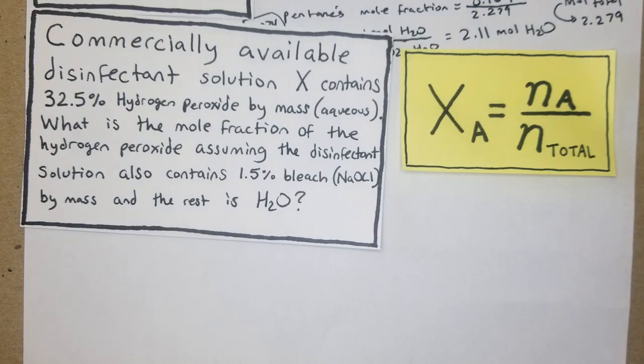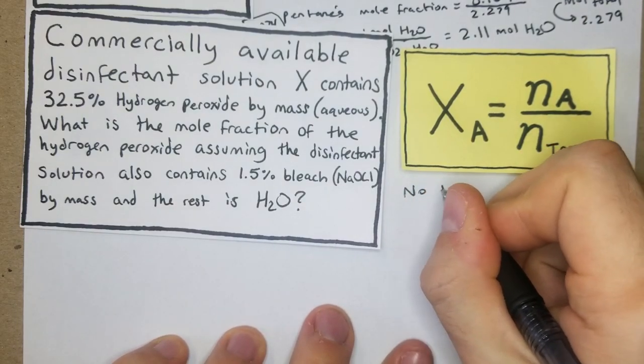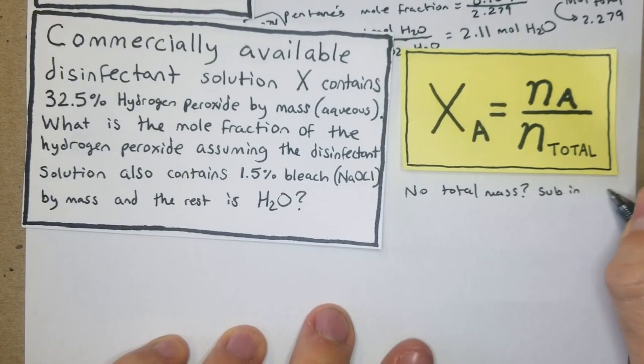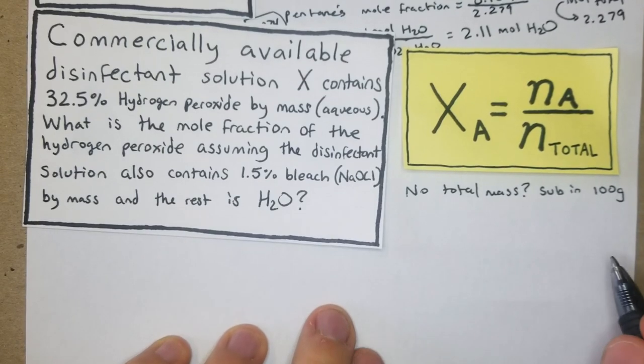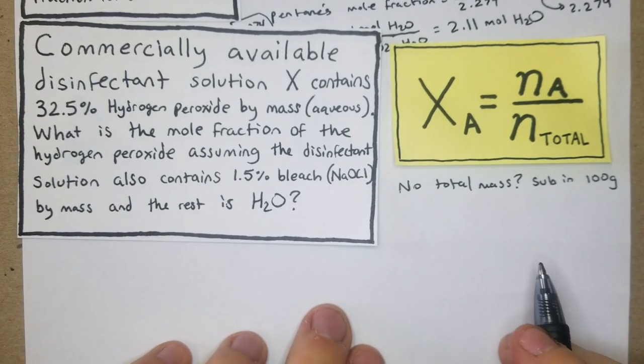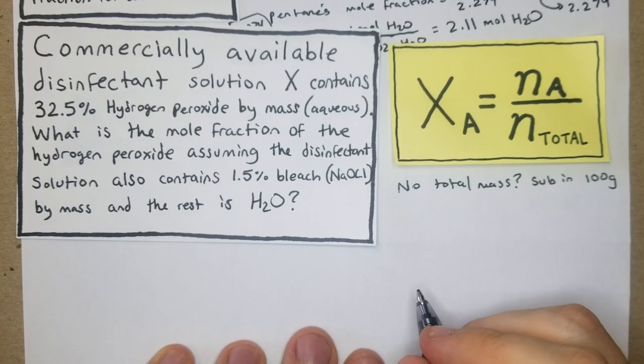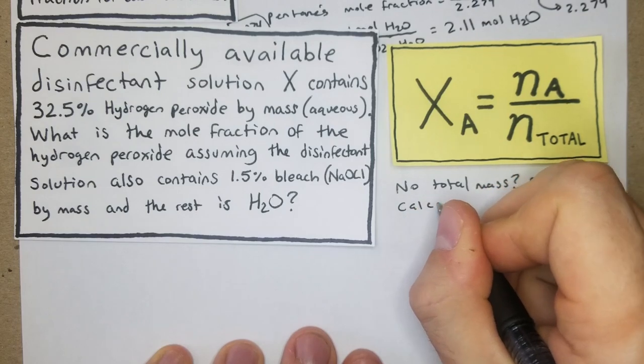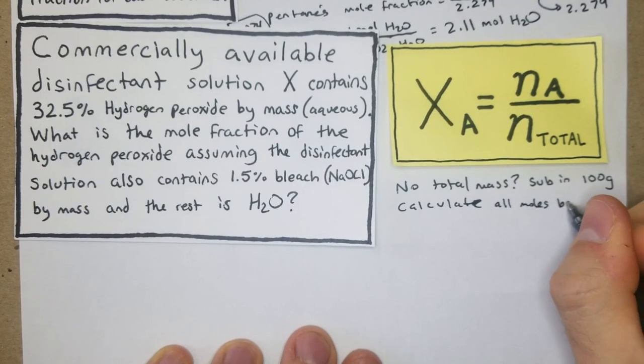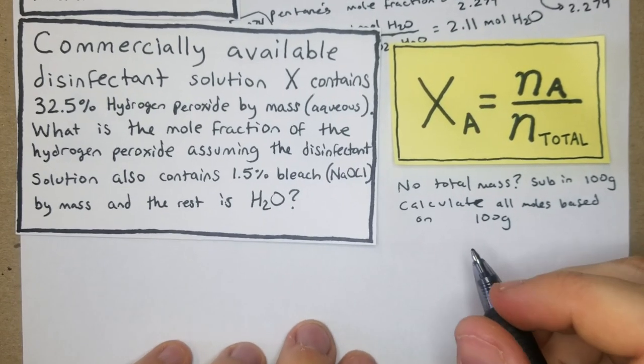We're not given a total mass, so whenever we're not given total mass, substitute in 100 grams. That's just going to make it easier, especially because if we have a percentage, you can directly translate it. You don't have to rearrange things. Calculate all moles based on 100 grams.